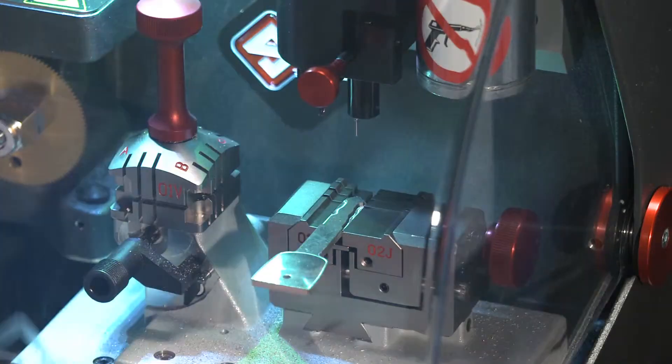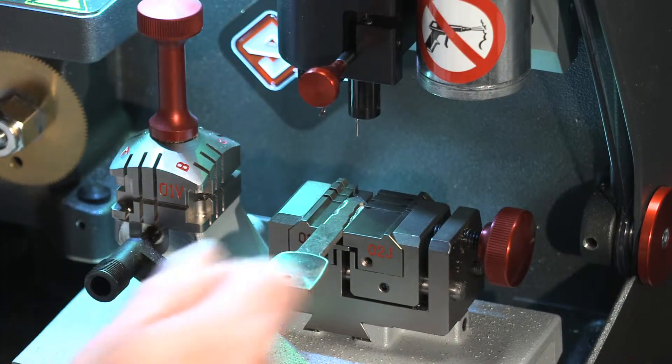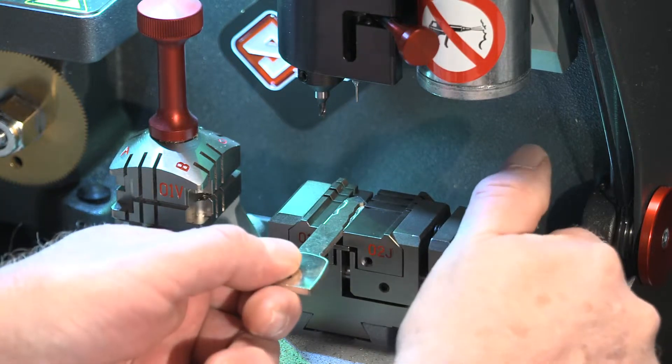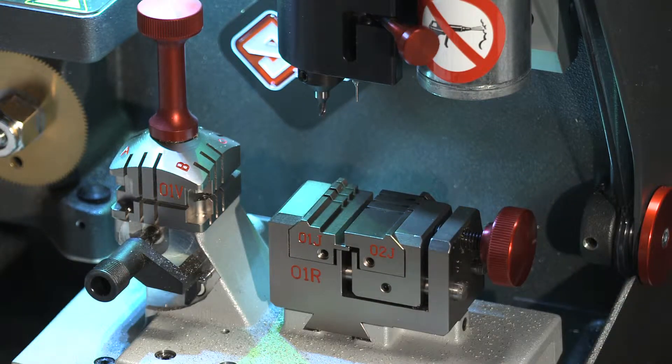Should the shield be raised while the machine is operating, a micro switch will deactivate all operations, including the cutter. To continue, simply lower the shield and follow prompts provided on the tablet.